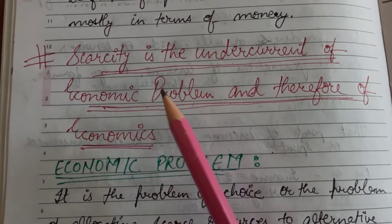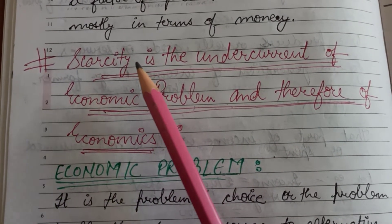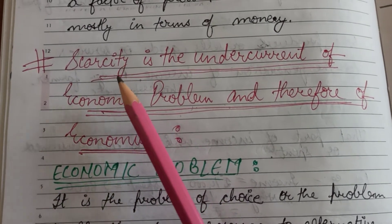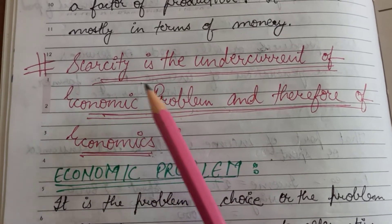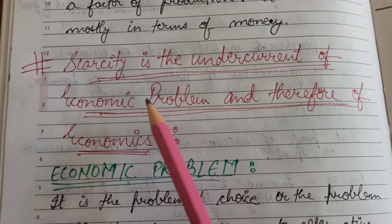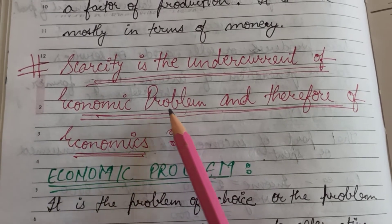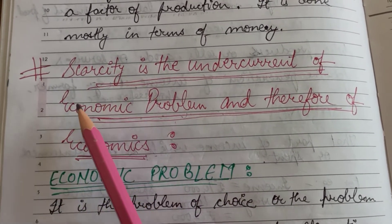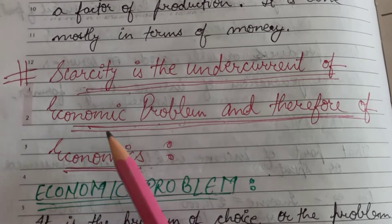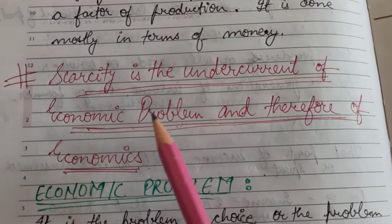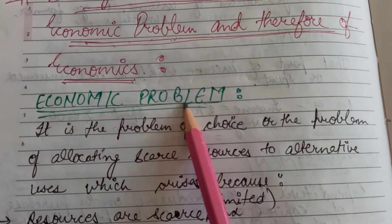Why does the economic problem arise? It arises because the resources are scarce, resources have alternative uses, and our wants are unlimited. Therefore scarcity is the main reason why economic problem arises. If there is no scarcity there will be no economic problem. Economics is the study of the economic problem based on scarcity, so if there is no economic problem there will be no need of studying economics.